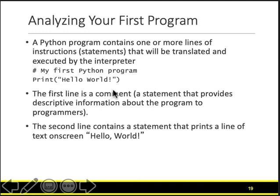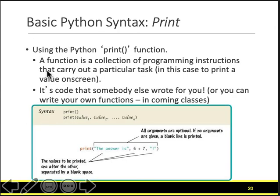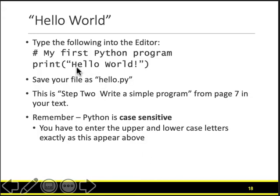The next line contains a statement. That statement in this case — note this is a lowercase p — is print hello world. It should be written correctly. Print hello world means print something to the screen. In our case, we said 'hello world' with an exclamation mark. Anything that's written inside quotes in the parentheses is thrown to the screen as is — so 'hello world!' will be sent to the screen.